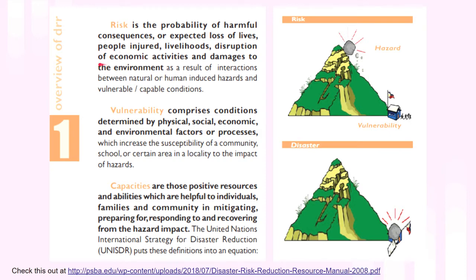Let's go over an overview and clarification of key terms. Risk is a probability — a likelihood — something you can predict, compute, and project forward. Risk is the probability of harmful consequences as a result of natural or human-induced hazards. In this example, there is a mountain with a school at its base and large rocks on top. The risk is that those rocks, or parts of that land, could undergo a landslide and hit the school at the bottom of the mountain.